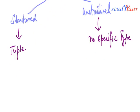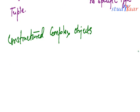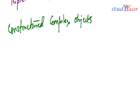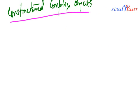What are unstructured complex objects? We are going to look at unstructured complex objects and what features, or rather what implementations, an object-oriented database supports for them. An unstructured complex object has no specific type. For example, let's suppose I have a bitmap image.